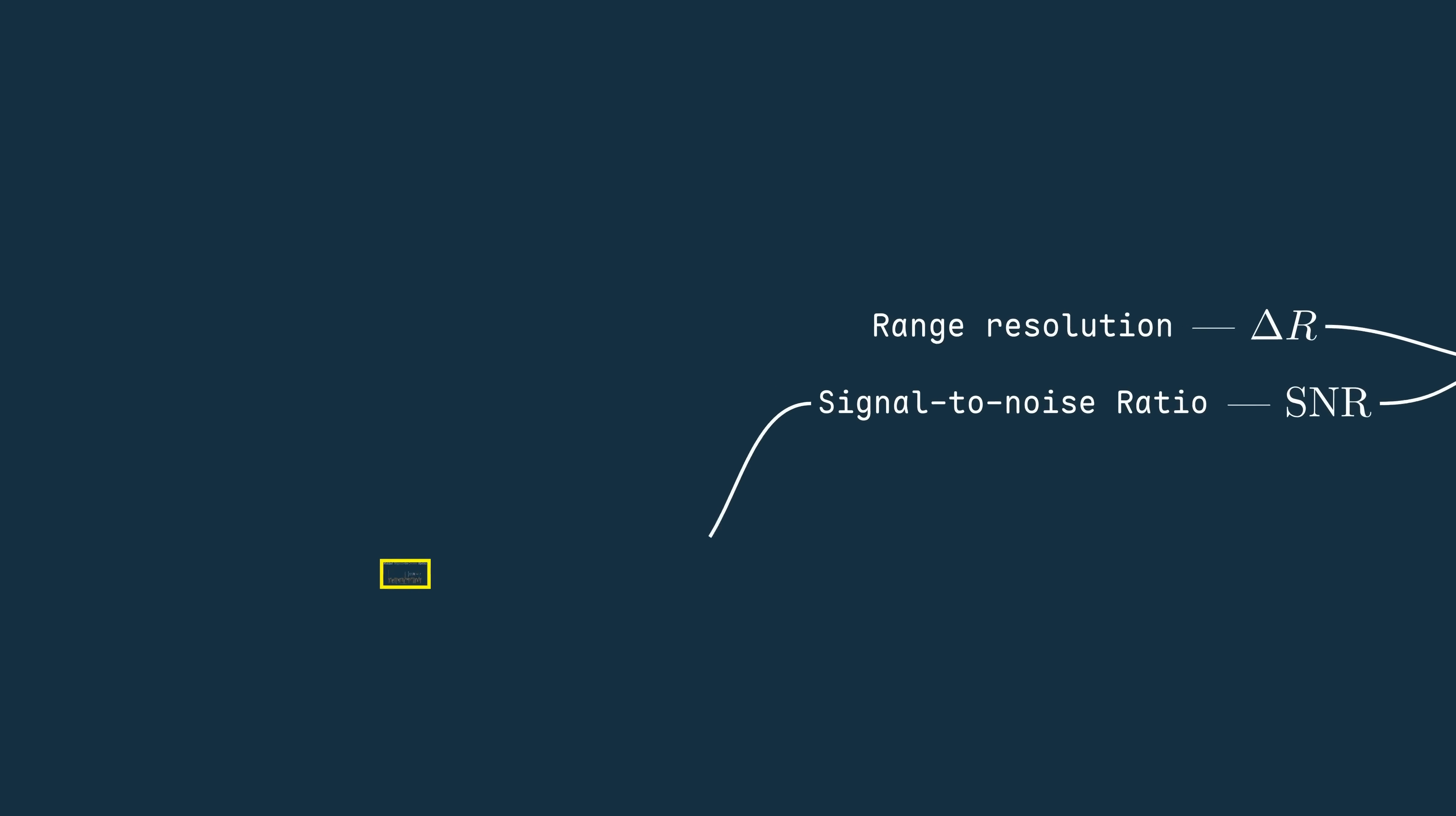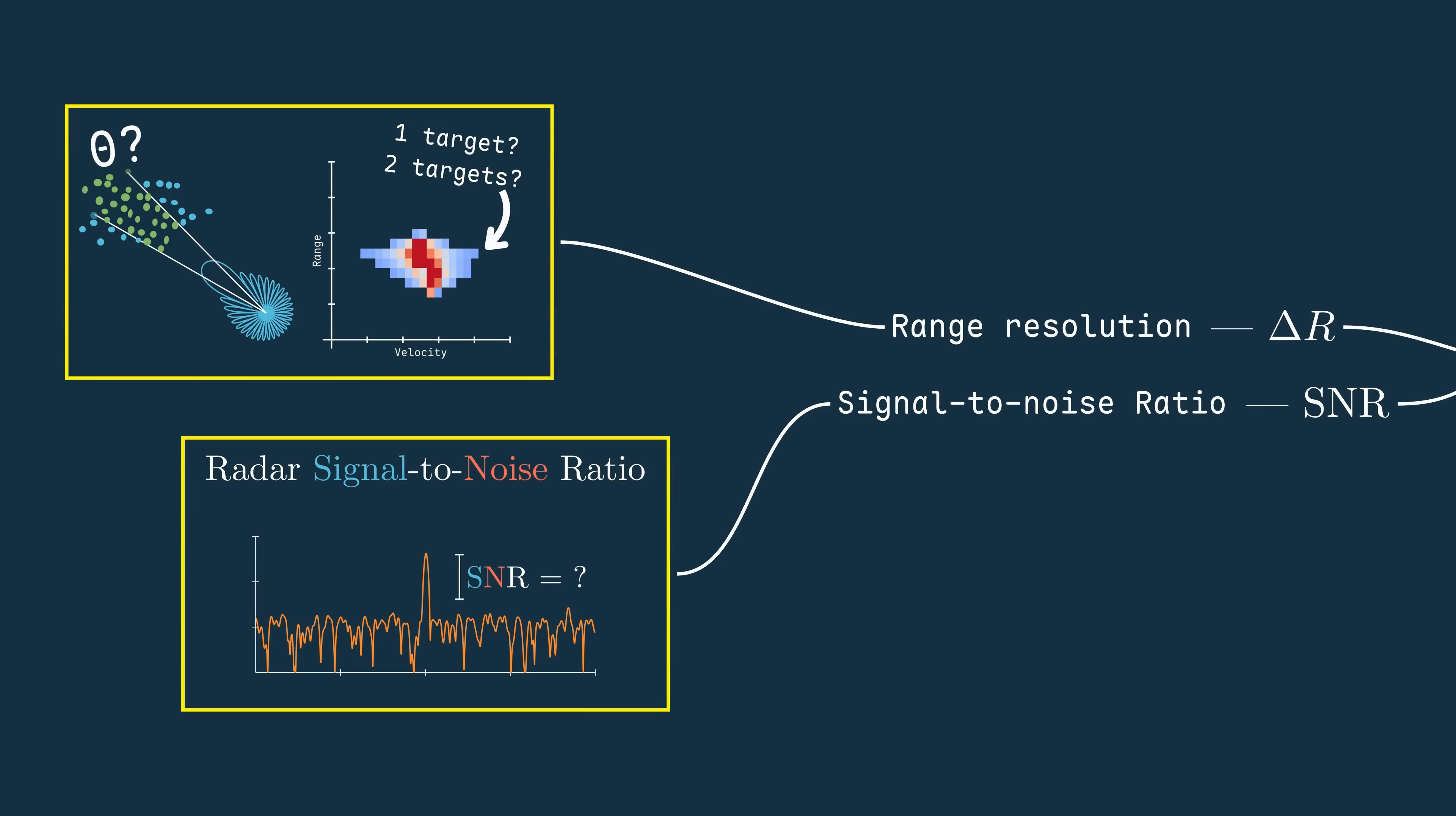I made a video about each of these individually, but here's the gist of why this is. A pulsed radar transmits an RF pulse and waits for it to return. When the pulse echoes off a target,